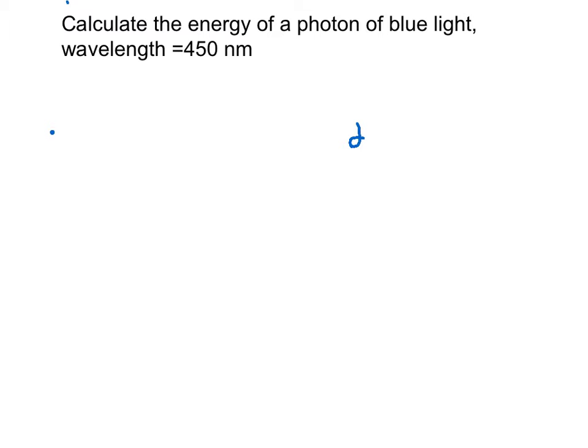In this problem, we are going to calculate the energy of a single photon of blue light at a given wavelength of 450 nanometers. So anytime we're solving these problems, the first thing you want to do is define your variables. So the wavelength is equal to 450 nanometers. That's pretty obvious from the problem.